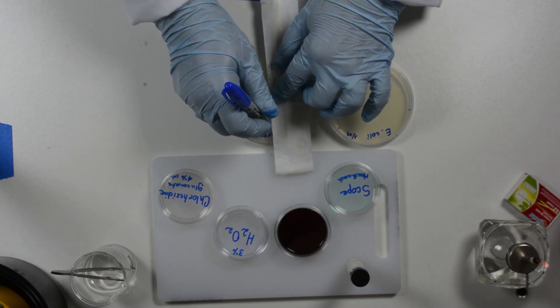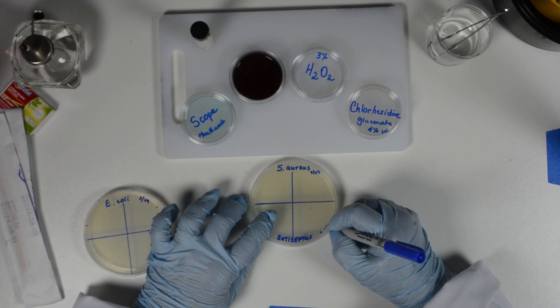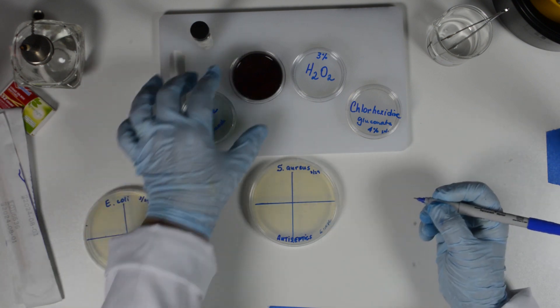We inverted the inoculated plates, traced a quadrant on the bottom, and labeled each quadrant with the chemical we chose to use.